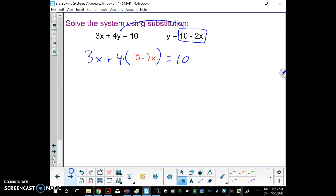Now we have an equation that involves just x, so now we can solve that. Distribute: 3x plus 4 times (10 minus 2x) equals 10. So 3x plus 40 minus 8x equals 10.